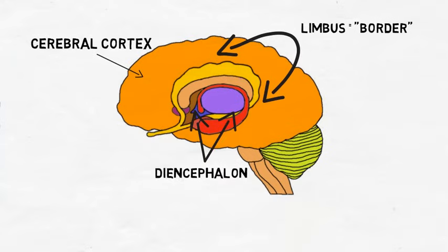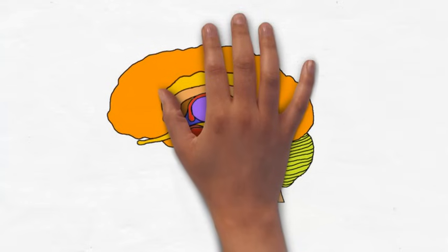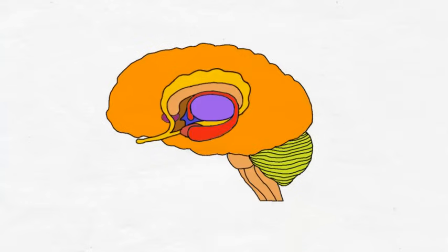There are many processes associated with the limbic system, but the system is most frequently linked to emotion. There is no consensus on the structures that are considered a part of the limbic system, and some argue that it is too much of a simplification to consider something as complex as emotion to be handled by one group of brain structures.